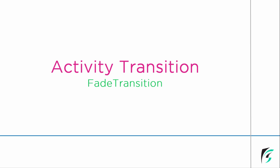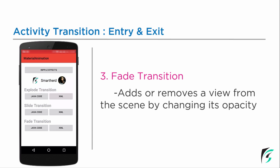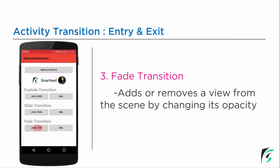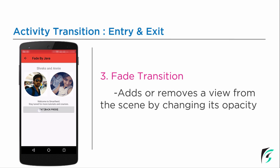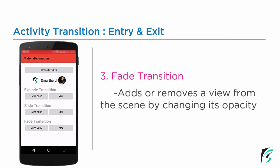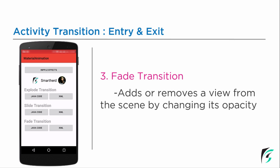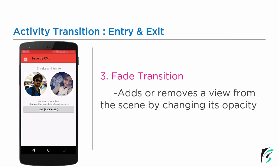So what exactly is fade transition? Fade transition adds or removes a view from the scene by changing its opacity — it will just fade out of the screen or fade into the scene. On the left side of the screen, you can see the demo application we will be building for the fade transition. On clicking the button, you can see the next activity just fades into the screen, and on pressing the exit button, it just fades out.